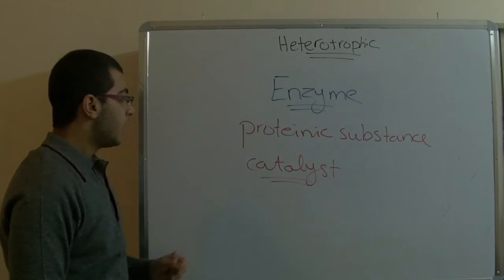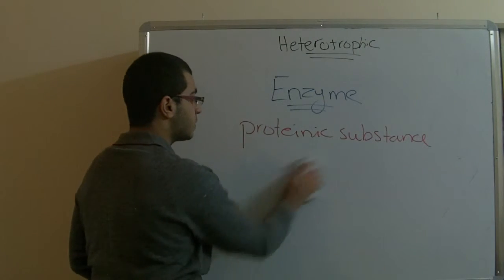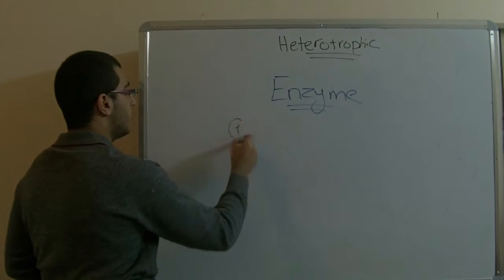The catalyst in chemistry is a substance which is introduced to a chemical reaction to increase its speed without affecting its chemical products. Here, the enzyme acts the same way—it has the properties of a catalyst.